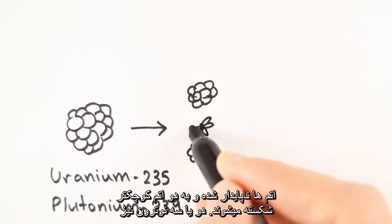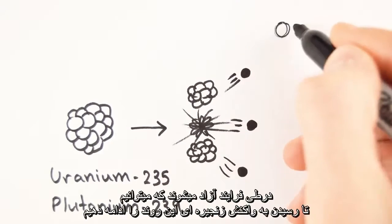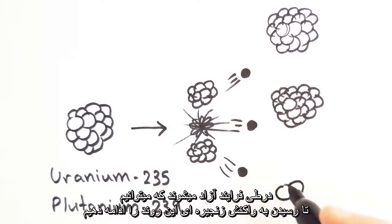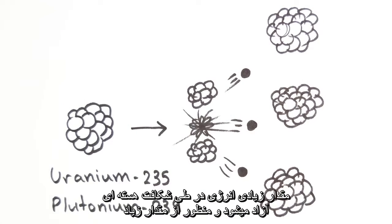When this happens, the nucleus becomes unstable and splits into two smaller nuclei. Two or three neutrons are also released in the process, which can go on to cause a chain reaction.